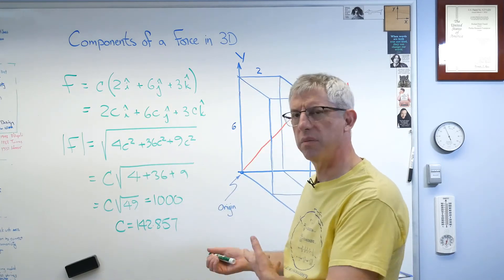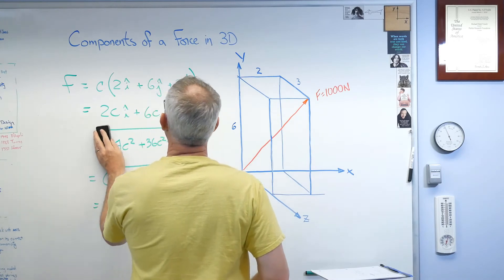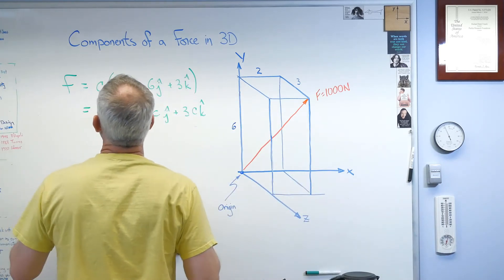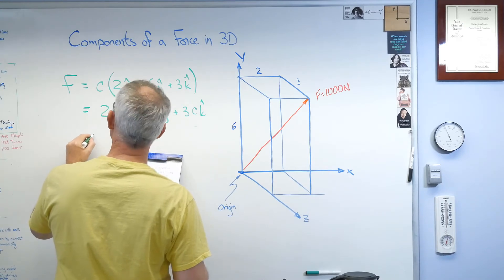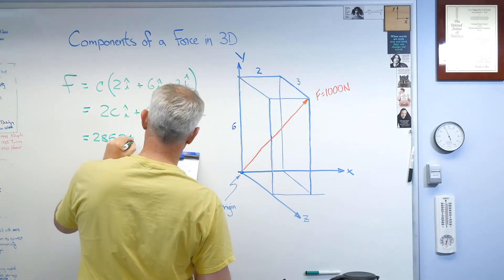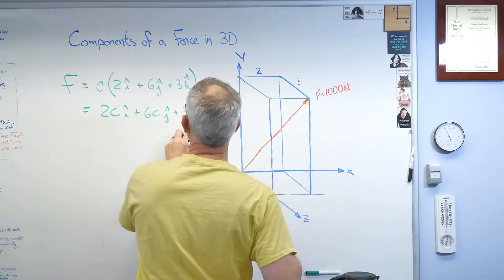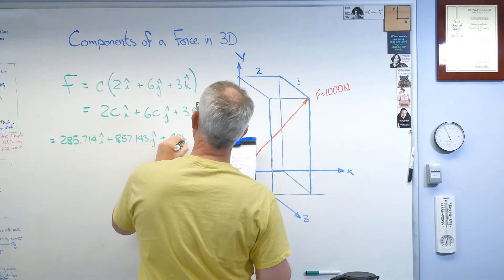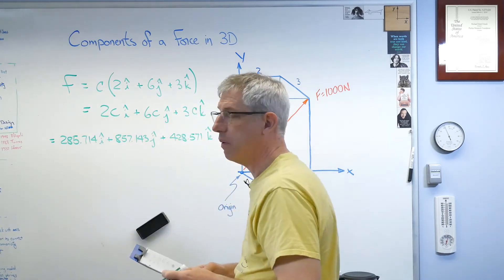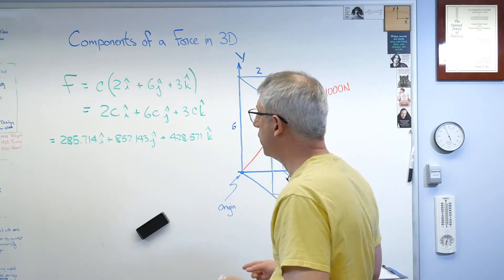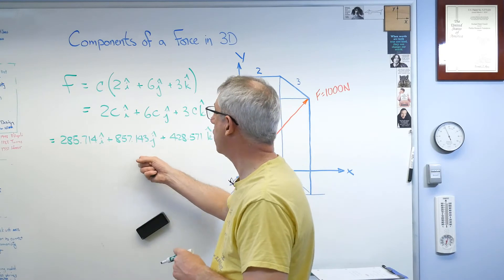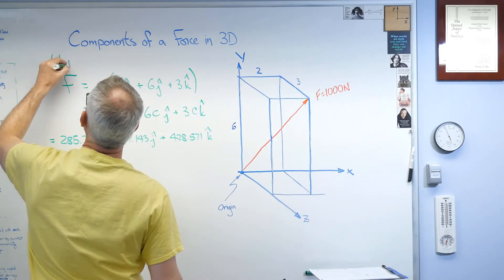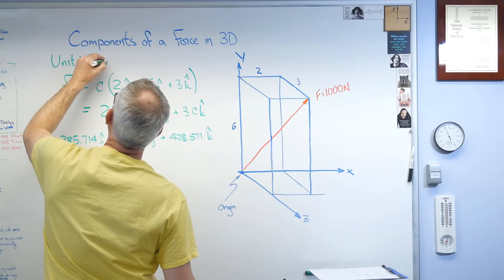So if we plug c back in there. Can I erase this stuff here? Got as much of that as you want. Let's see. I have to use my cheat sheet here. There's no way I was going to remember this. Since we know c now, that turns out to be 285.714i plus 857.143j plus 428.571k. There it is in vector form with i, j, and k. And just when you, if you double check, if you go ahead and figure out the magnitude of that, it really is 1,000. So there's one way to do it. This is with unit vectors.